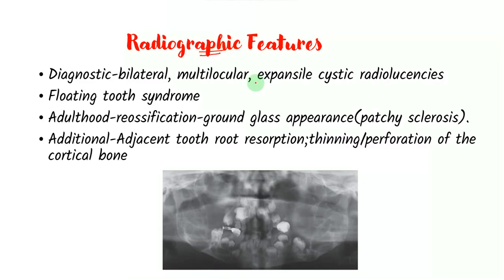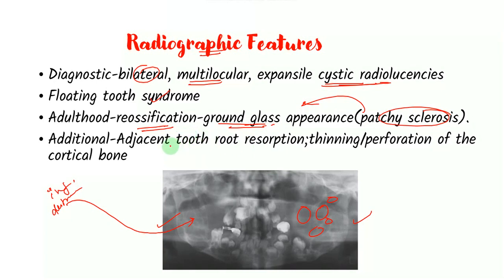Now if you look at the radiographic features, the classic thing about Cherubism, how you identify is the presence of multilocular cystic radiolucencies which are bilateral, which is present on both sides. So if you remember when I was talking about the etiology of the disease, I told you activity of osteoclasts and macrophages leads to inflammation and bone destruction, and that is seen as a cystic appearance in the jaws. So here you see multiple cystic radiolucencies. We have already studied about the floating tooth syndrome. As the disease begins to regress into adulthood, there is reossification, patchy sclerosis, which might lead to a ground glass appearance. Additional findings include adjacent tooth root resorption, thinning and perforation of the cortical bone.